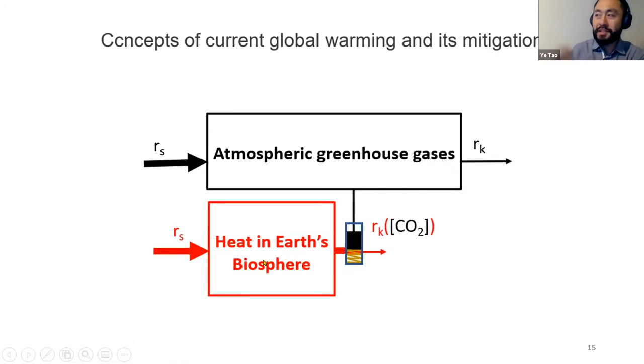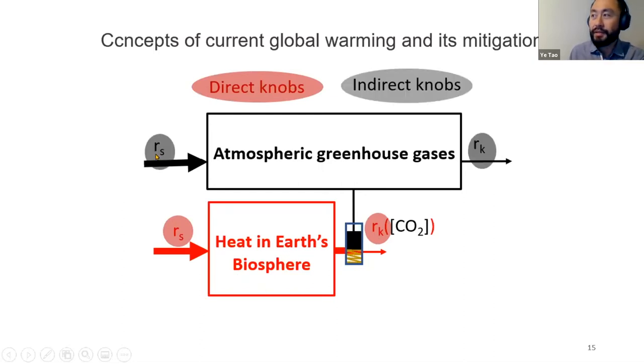We can also use the same diagram to understand multiple mitigation strategies or concepts. Essentially, we have four different knobs: Rs and Rk for greenhouse gases and for heat. Some are direct knobs because they directly address the central problem, which is overheating. Others are indirect knobs because they do not tackle the actual problem but try to do so through tuning other factors that are mechanistically coupled.